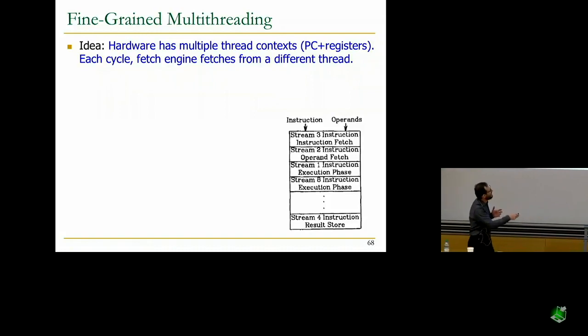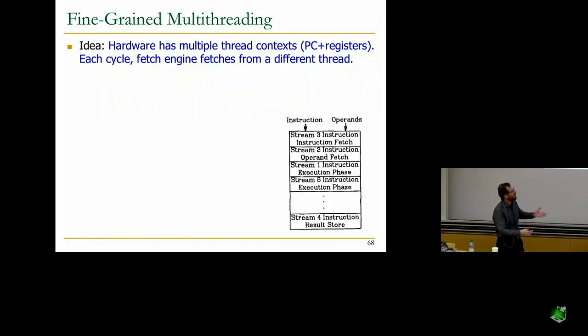You can see it here. For example, this is the fetch stage. When one instruction is being fetched from thread 3, another instruction is fetching its operand in thread 2. Another instruction from thread 1 is executing. Another instruction from thread 8 is executing. Another instruction from thread 4 is storing its result. There is no single thread that has two instructions at the same time in the pipeline.